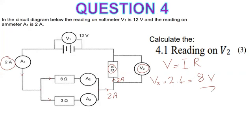So we used Ohm's law. On the main conductor you have the same current throughout. Question 4.1 is done. If your answer is 8 volts and you wrote the formula, you have 3 marks already out of 10.